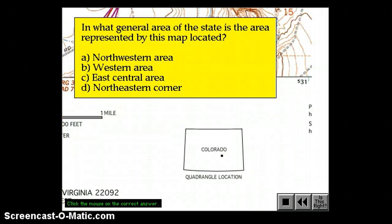If you'd like to know the general area that the map is covering, look in the lower right portion of the map and you'll see an outline of the shape of the state and then a dot representing the location from where that 7.5 minute quadrangle is taken.